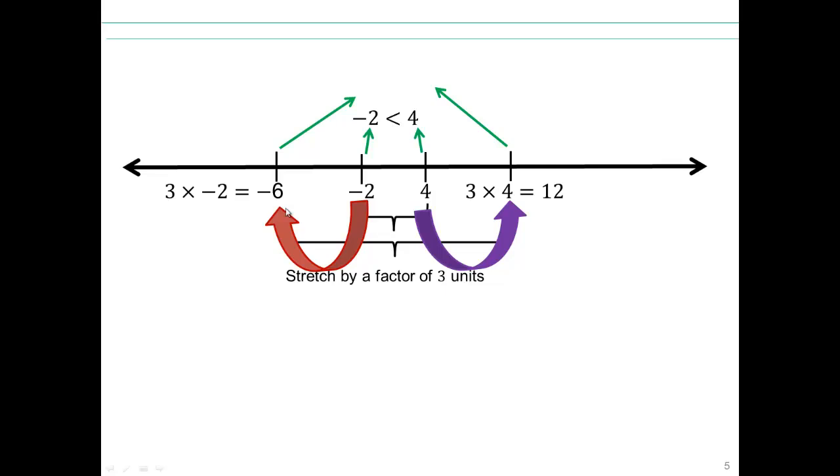Like from here to here is a factor of 3. From here to here is a factor of 3. So you can see, what about the inequality between negative 6 and 12? Well, 3 times negative 2 is negative 6, and 3 times 4 is 12. And negative 6 is still smaller than 12.